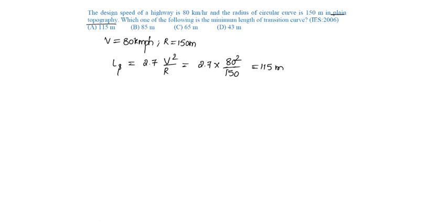Let us check the transition curve length using rate of change of acceleration as minimum or maximum, which is v³ by cr. C equals 80 by 75 plus v, where v is 80, giving c = 0.516.